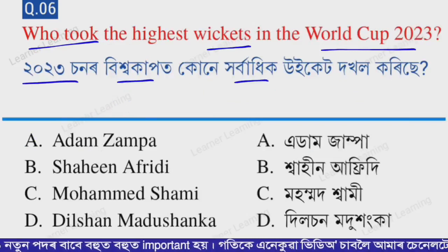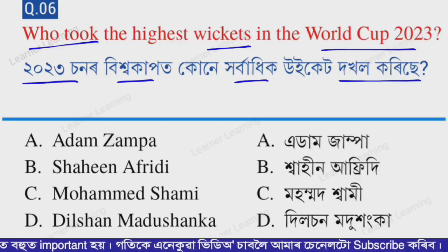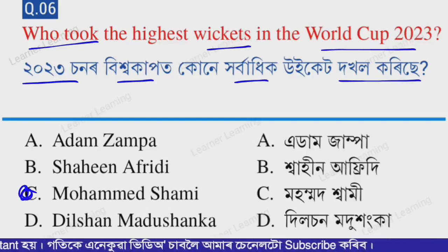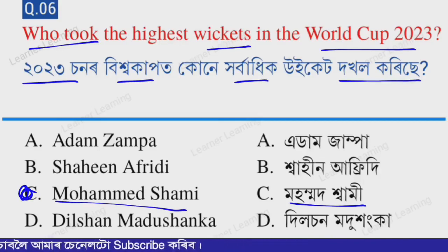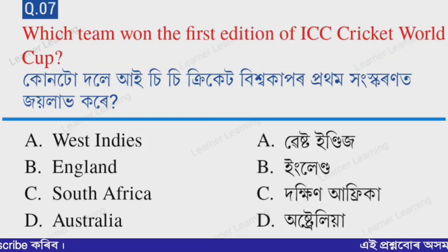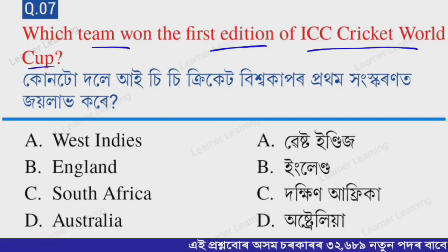Next question: who took the highest wickets in the Cricket World Cup 2023? The correct option is option C — Mohammad Shami. Mohammad Shami took the highest wickets in the 2023 World Cup. It is also a very important question.